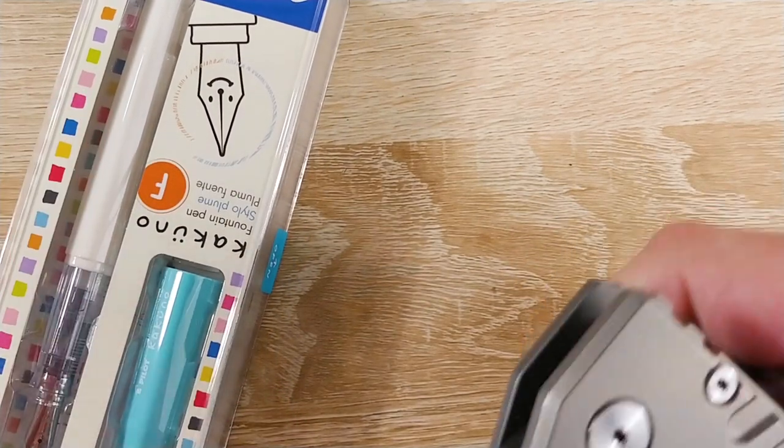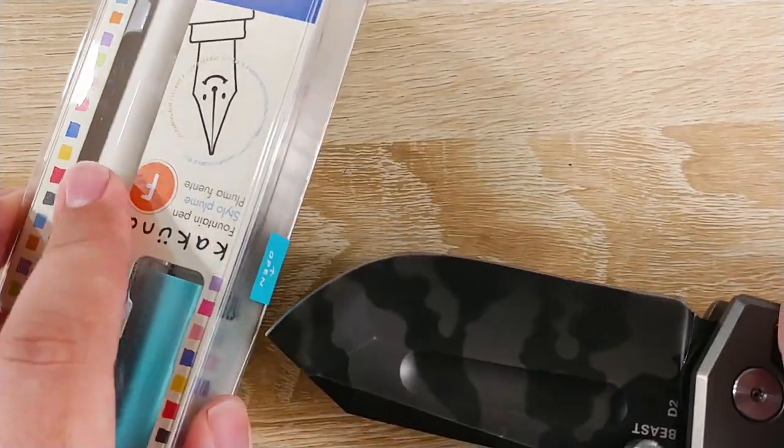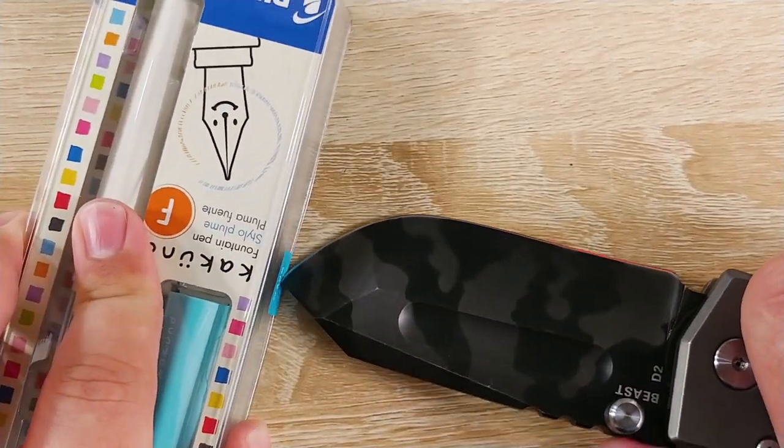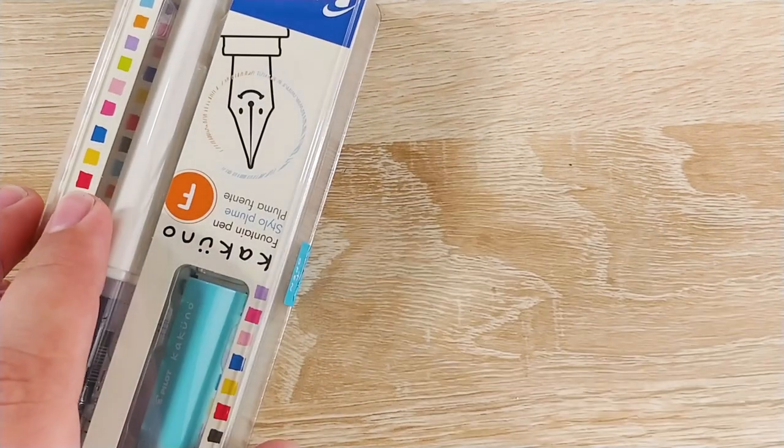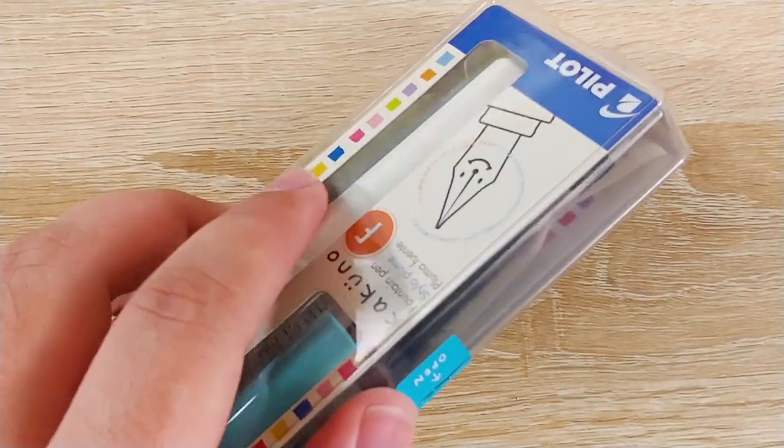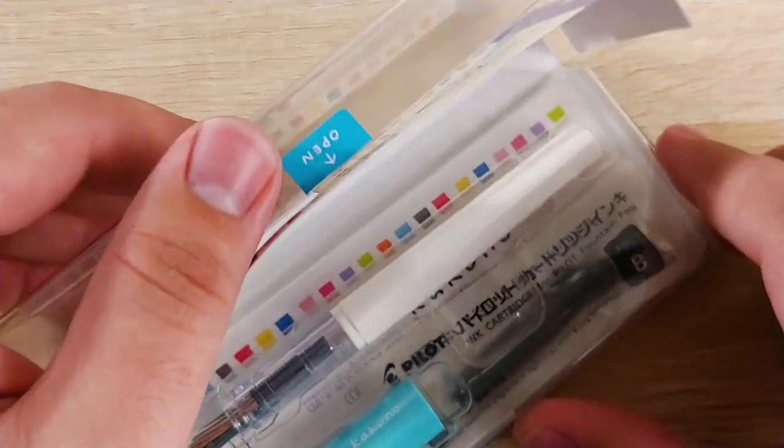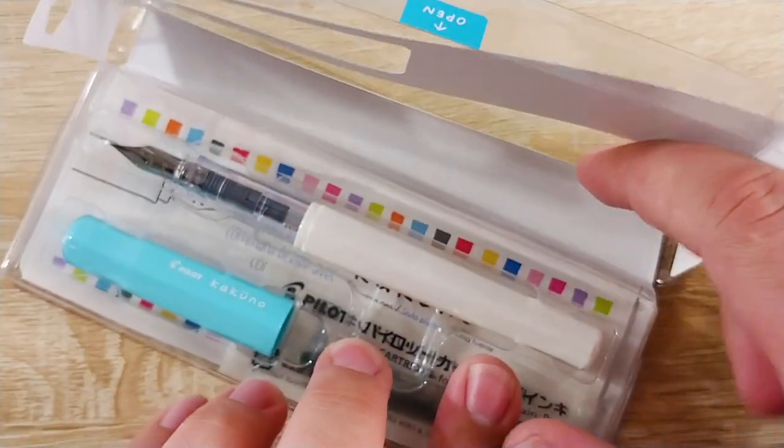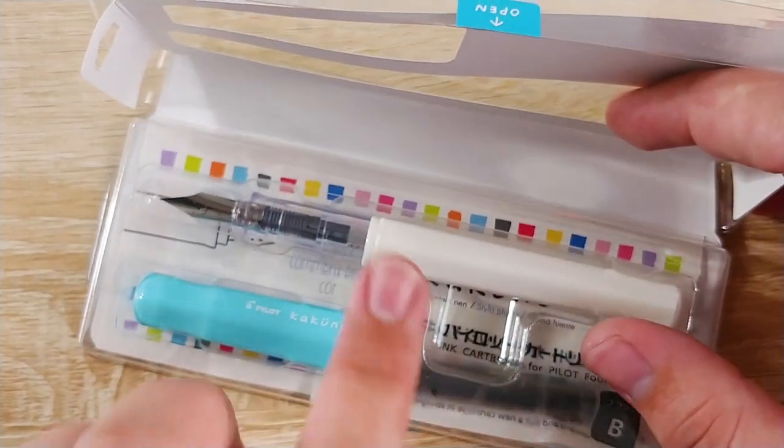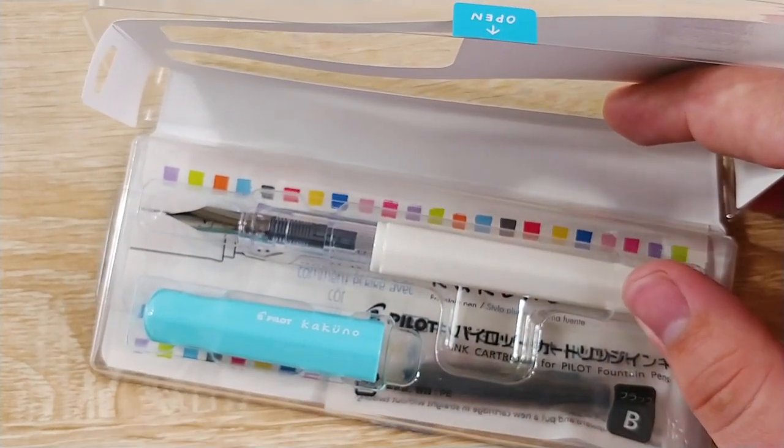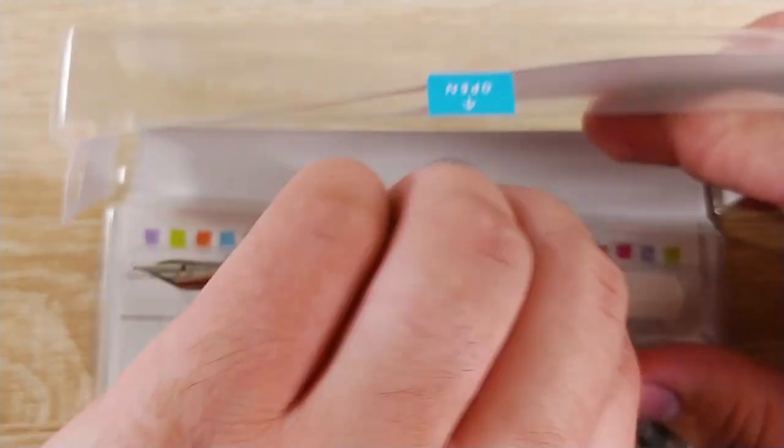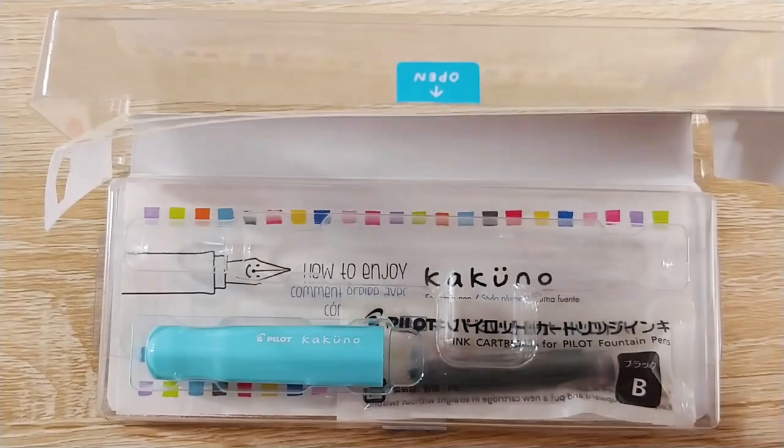Get my little unboxing knife here and just slice that right open. So inside we've got the fountain pen, we've got the cap, and it looks like we have a cartridge underneath that, which I won't be using. I'll be using a converter.